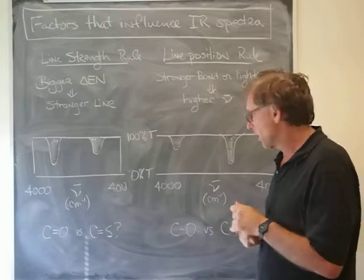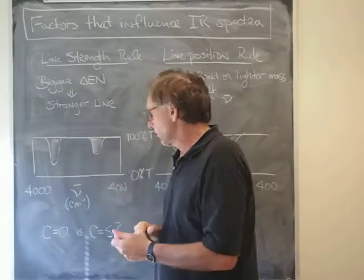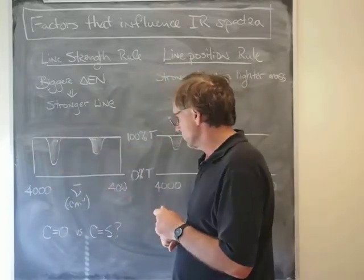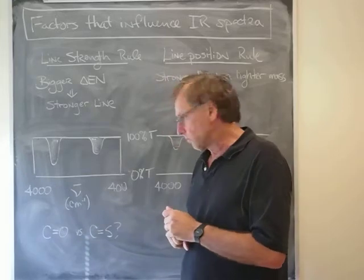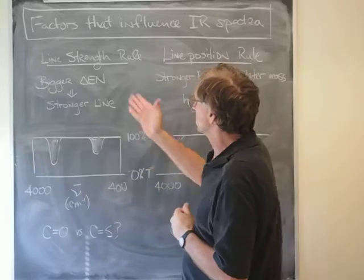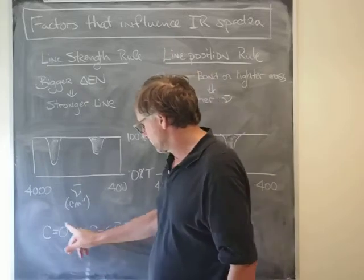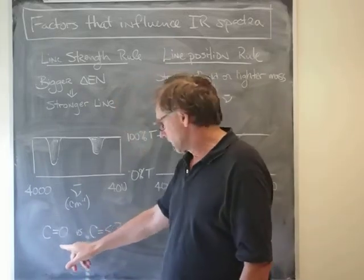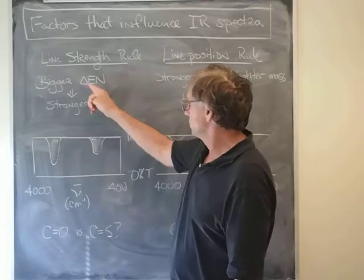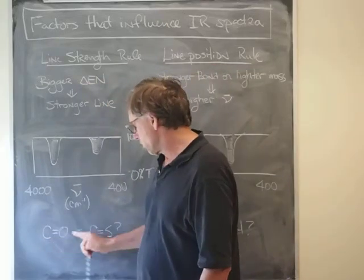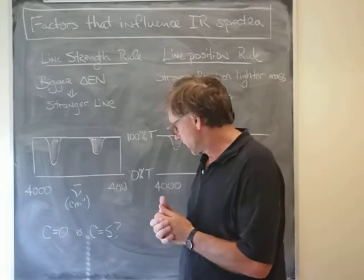Let's take a couple of examples. I see two peaks here. This one is a stronger absorber, this one's a weaker absorber. Let's suppose we know that one of those was carbon double bonded to oxygen and the other one was carbon double bonded to sulfur. Let's look at the line strength rule. If you look up the electronegativities of carbon, oxygen, and sulfur, you find that this has a much bigger difference in electronegativity between carbon and oxygen. Carbon and sulfur have a very small difference in electronegativity. So we would expect that the stronger absorber would be this one. That is to say, this stronger absorber would correspond to carbon double bonded to oxygen.